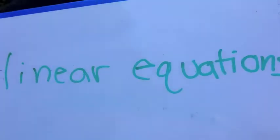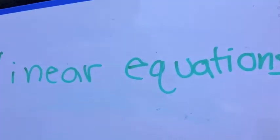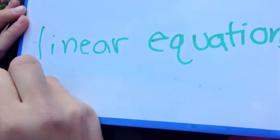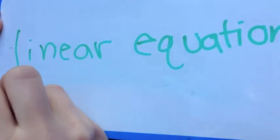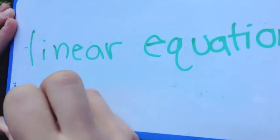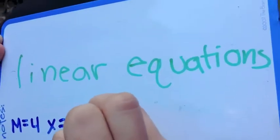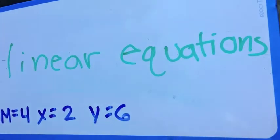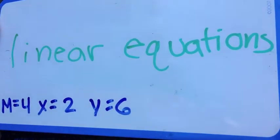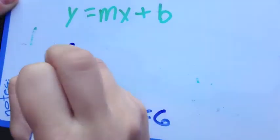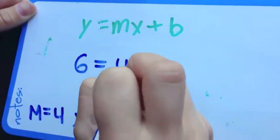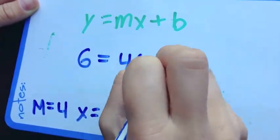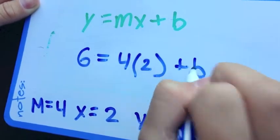What if you're given x, y, and m? Well, if m equals 4, y equals 2, and x equals 6, you do the same thing. You just plug it in. x equals 4 times 2 plus b.